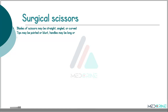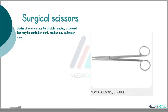Let's have a look at surgical scissors. The surgical scissors may be either straight, angled or curved. The tips may be pointed or blunt and handles may be either long or short.